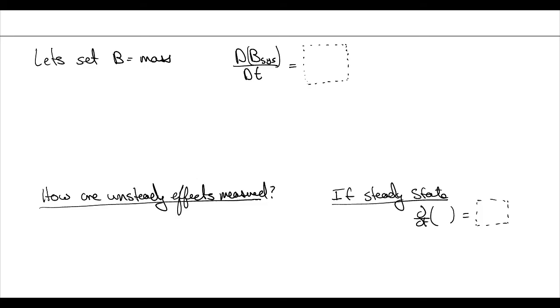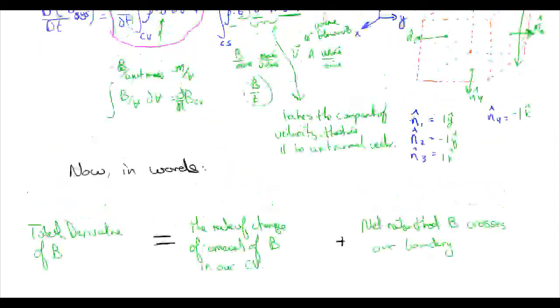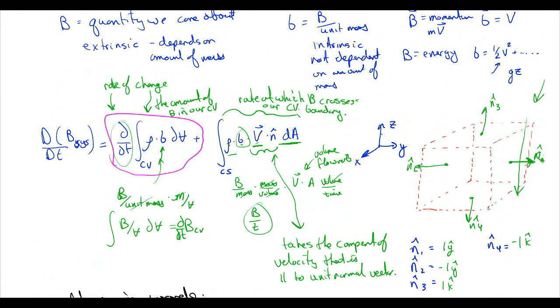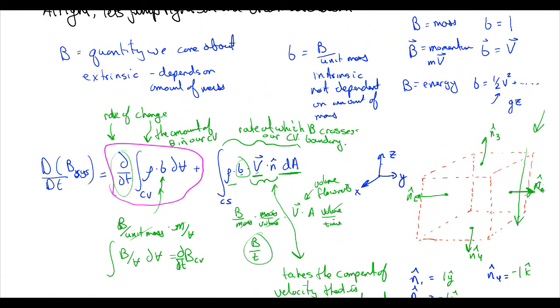Last video we talked about how we can use Reynolds transport theorem to keep track of something called B, which we don't really know what it is, but it's per unit mass. And the way we keep track of it is we say that the rate of change of B in our system is equal to the rate of change of B in our CV, within our CV, plus the rate at which B crosses our CV boundary.